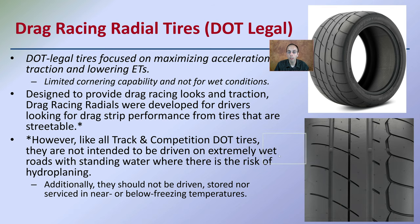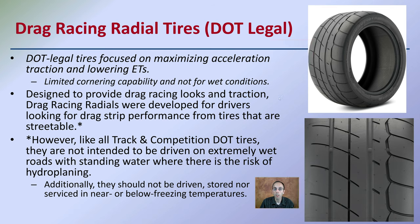Then we have drag racing radial tires, or DOT legal tires. These tires aim to maximize acceleration and allow a lot of contact with the road surface. They're designed for drag racing and maximum traction. You'll notice the tread is much reduced compared to mud tires, with a lot more surface contact on the road. These probably would not be best in wet or wintry conditions, but they are considered DOT legal, meaning they have the tread depth required to technically be used on DOT roads.